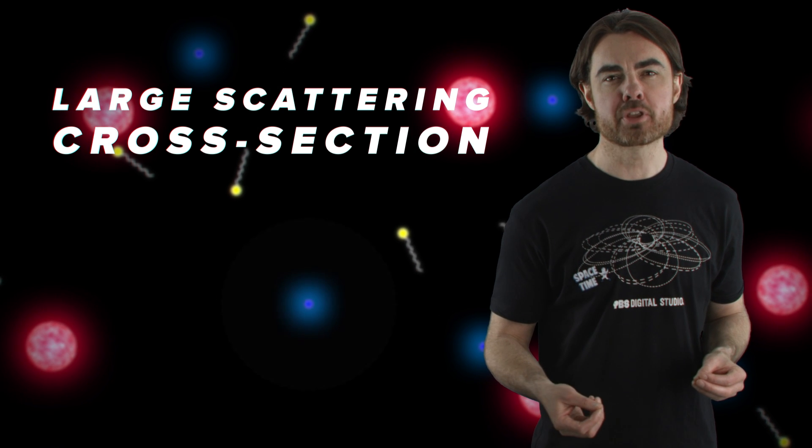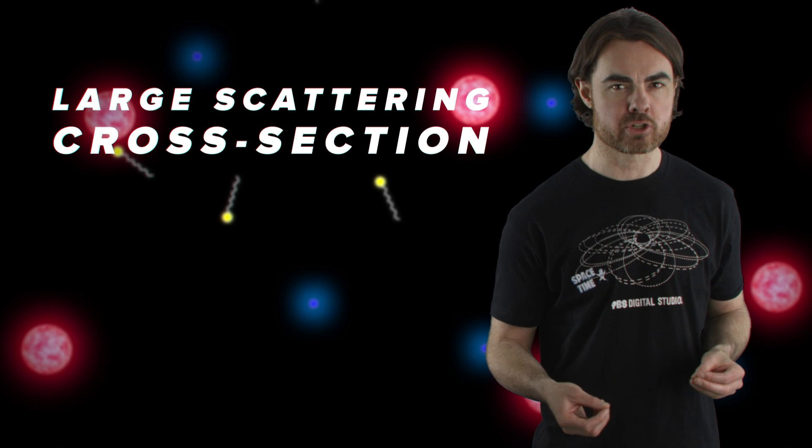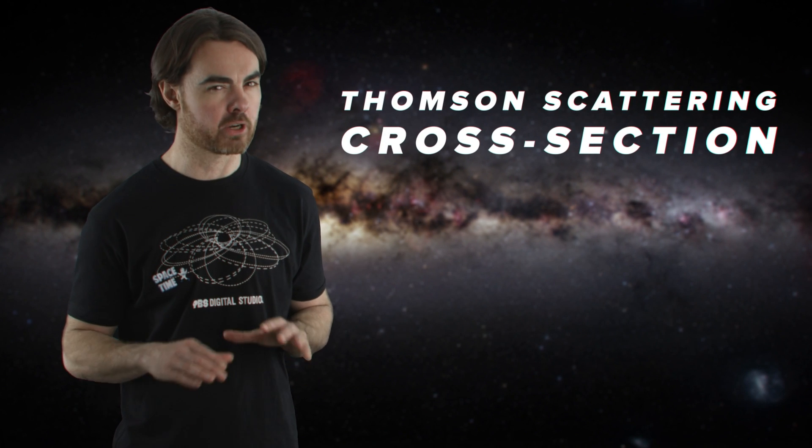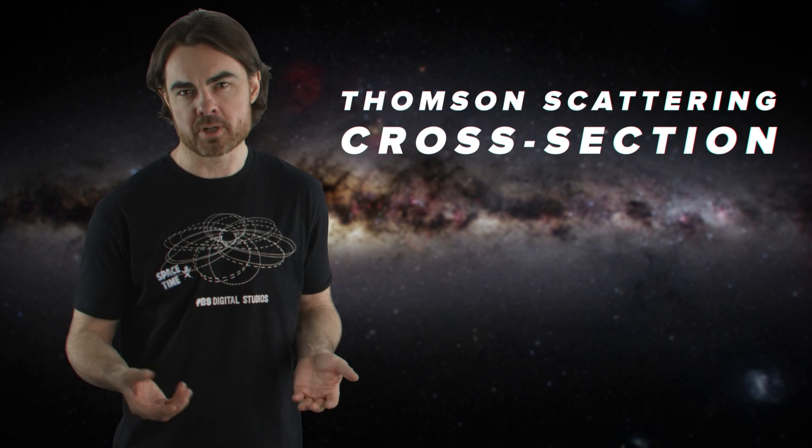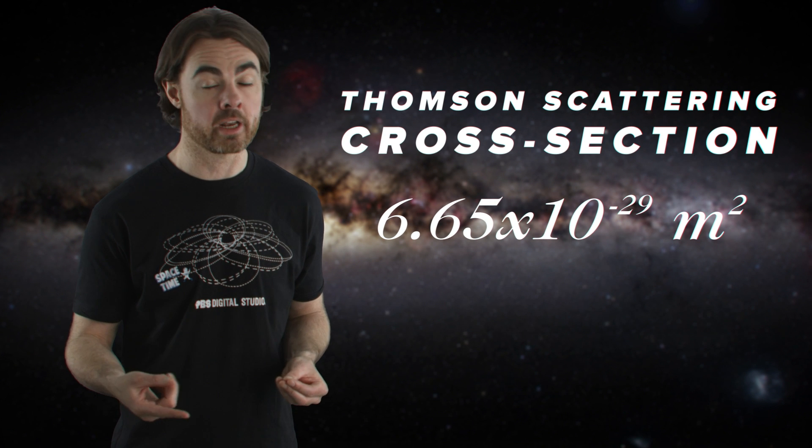By the way, the number that defines the size of this circle for electrons is called the Thomson scattering cross section. And it's 6.65 by 10 to the minus 29 meters squared. Protons and helium nuclei, the other common charged particles hanging around the universe at this time, have much smaller scattering cross sections than electrons do. So we're not even going to worry about them.